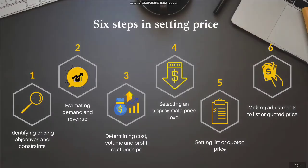There are 6 steps in setting price. The first one is identifying pricing objectives and constraints. Pricing objectives depend on the company. Examples of pricing objectives include increasing or maximizing profit, increasing sales revenue, pursuing market share, increasing unit volume, company survival, and social responsibility.